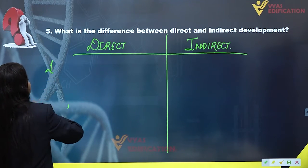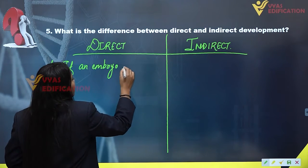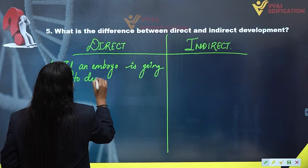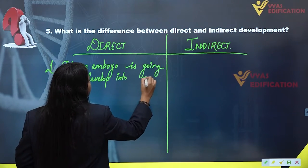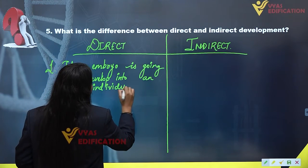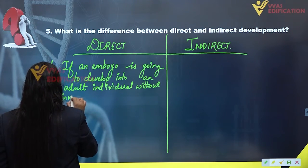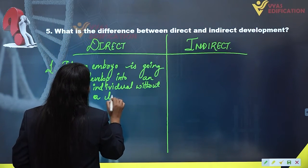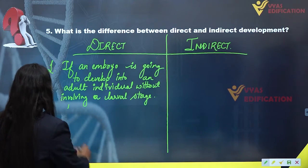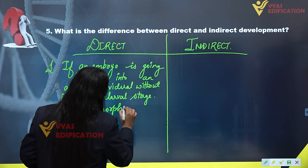The very first point: if an embryo is going to develop into an adult individual without involving an intermediate stage or a larval stage, then this kind of development is said to be direct development. Also, in direct development, no metamorphosis is seen.